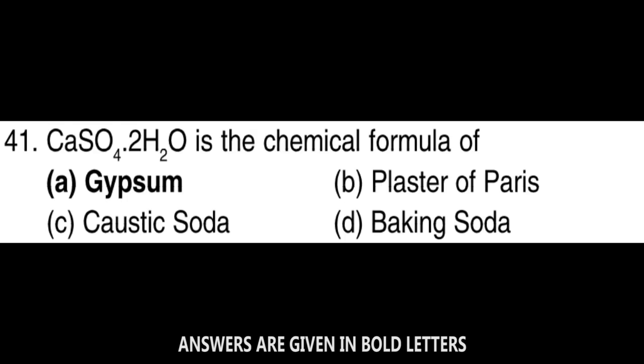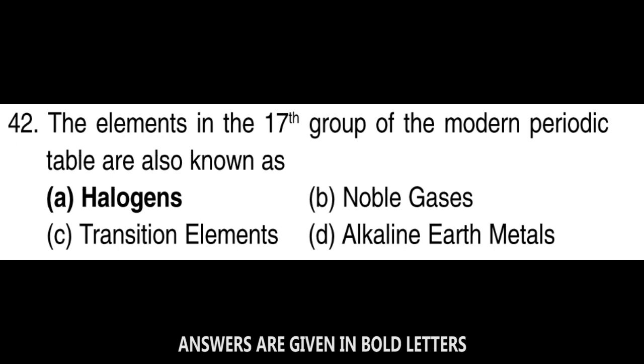Next question: CaSO4·2H2O is a chemical formula of gypsum. Next question: The element in the 17th group of the modern periodic table is halogens.